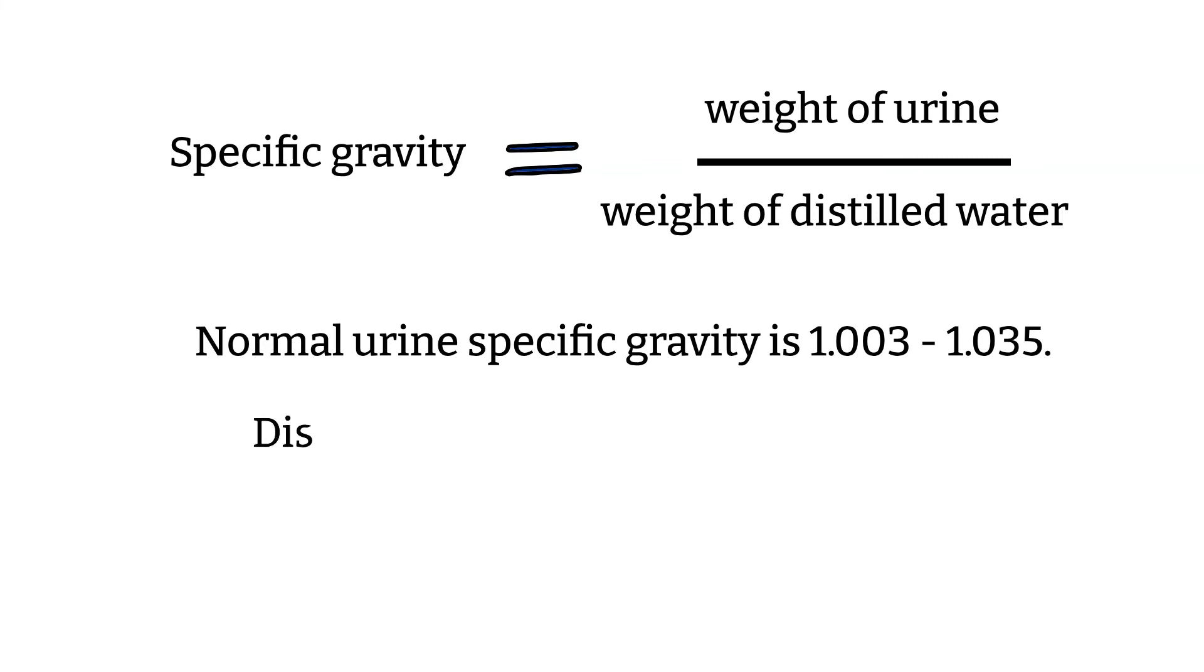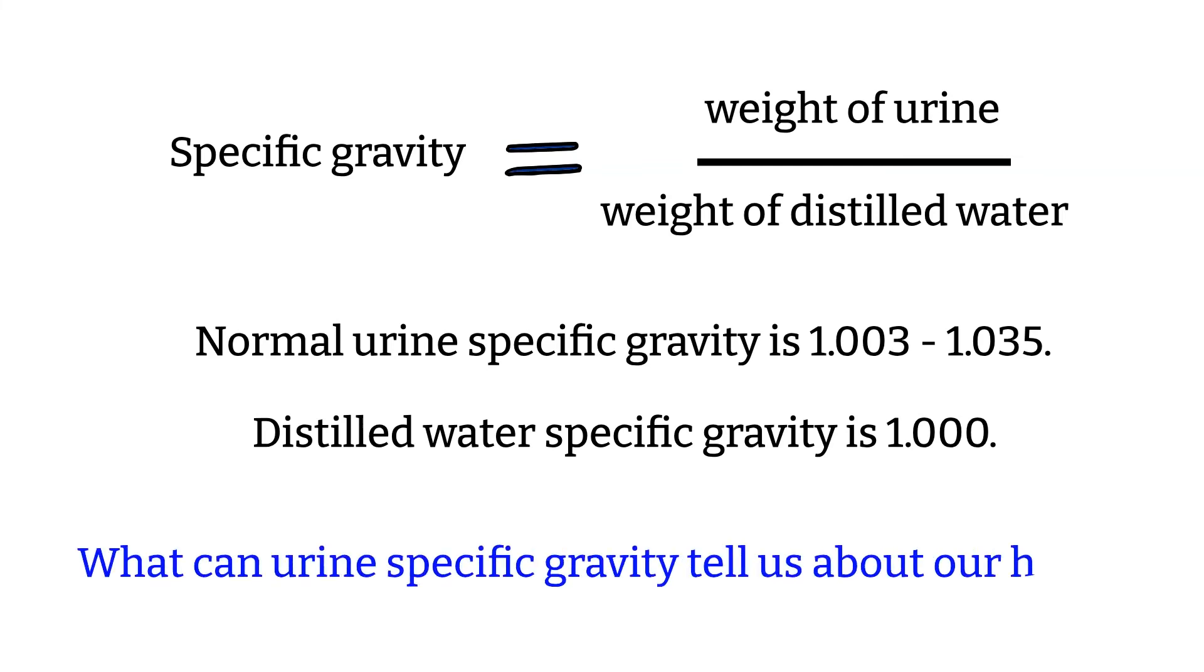The normal range of specific gravity of urine is 1.003 to 1.035. Water's specific gravity is 1. There are some conditions that would change the specific gravity of urine and terminology that CLS should know because it does show up on exams.